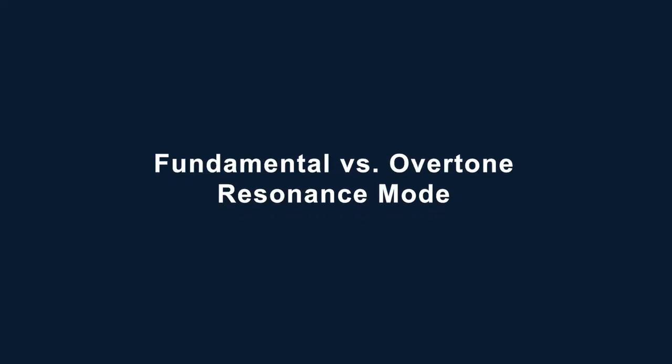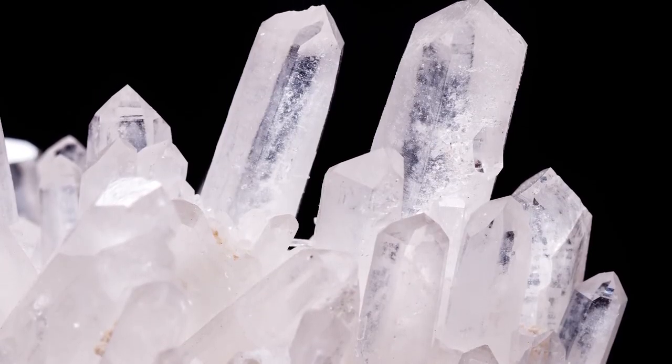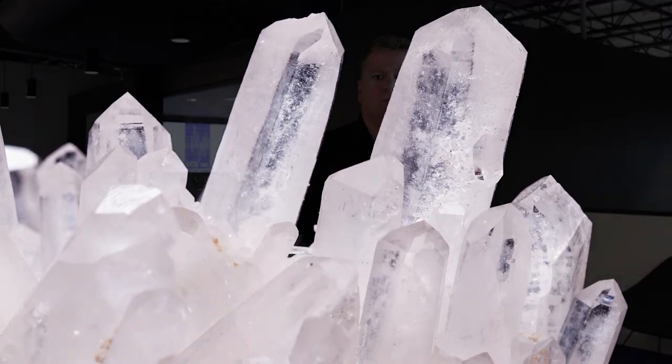Next, we will look at fundamental versus overtone resonance mode. The crystal frequency of a quartz crystal unit is limited by the physical dimensions of the vibrating quartz element. In some cases, the limiting dimensions are the length and width. The most popular crystal unit is the AT cut. The limiting dimension is the thickness of the vibrating quartz element. As the thickness is reduced, the frequency goes up. At some point, usually around 50 megahertz, the thickness of the quartz plate becomes too fragile for use in the field.